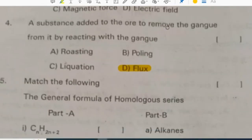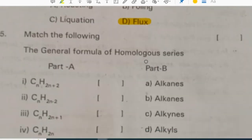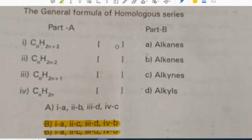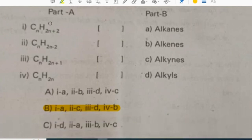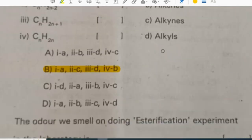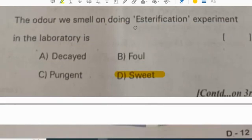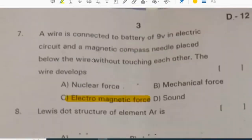Magnetic flux per unit area is called magnetic flux density. A substance added to the ore to remove the gangue is called flux. The odor you smell while doing the esterification experiment in the laboratory is like a fruit smell.